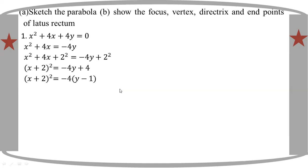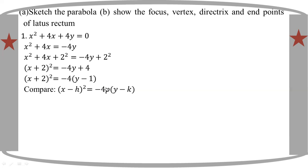Let's look at the parabola equation in standard form. We compare it to (x minus h) whole square equal to minus 4p(y minus k). Comparing: h is minus 2, k is minus 1, and we can see p from the comparison.